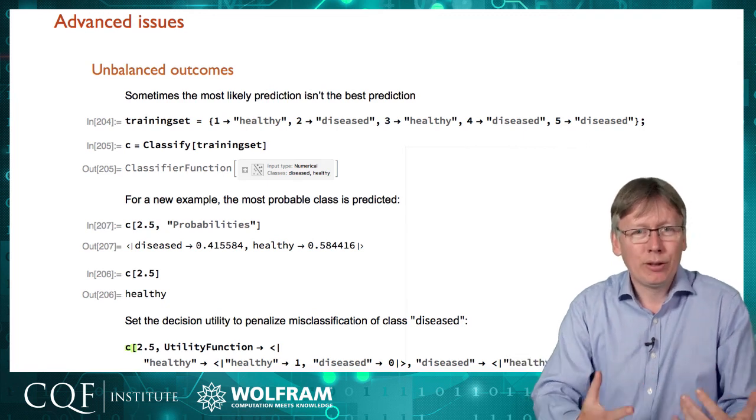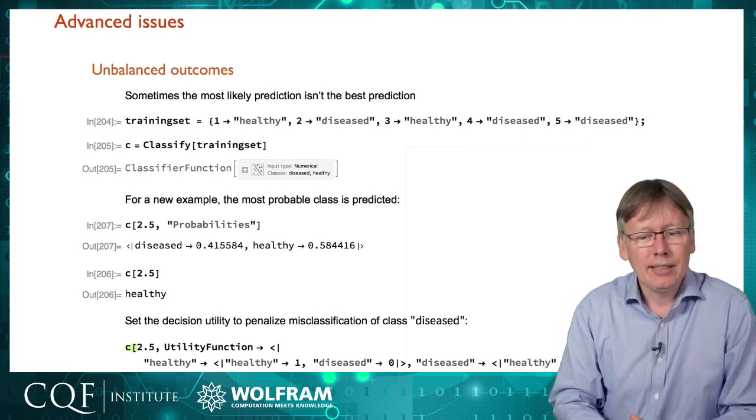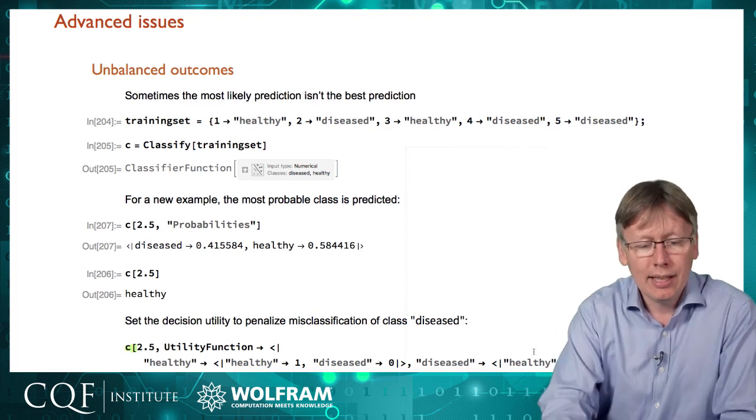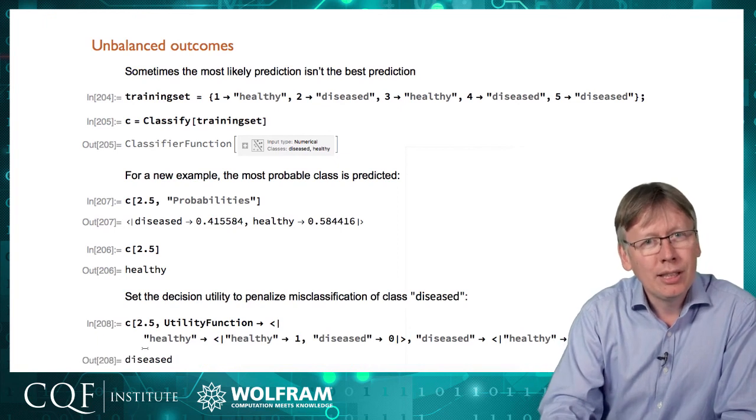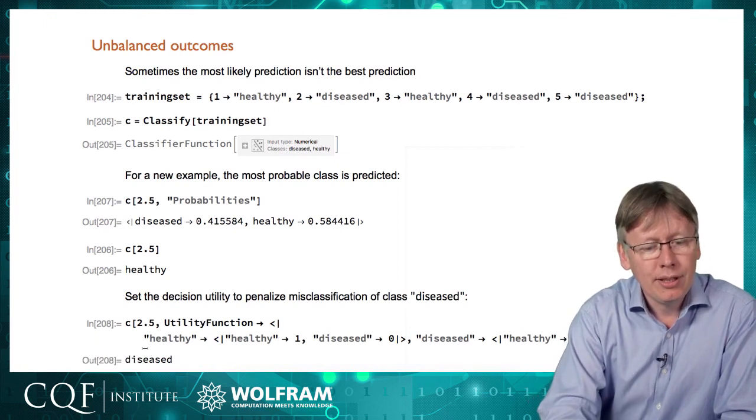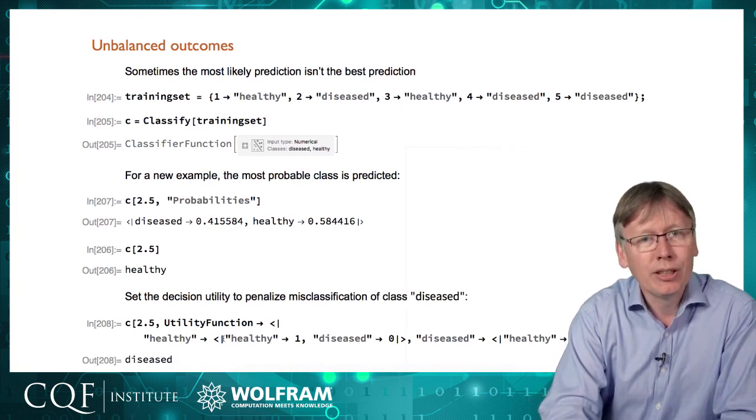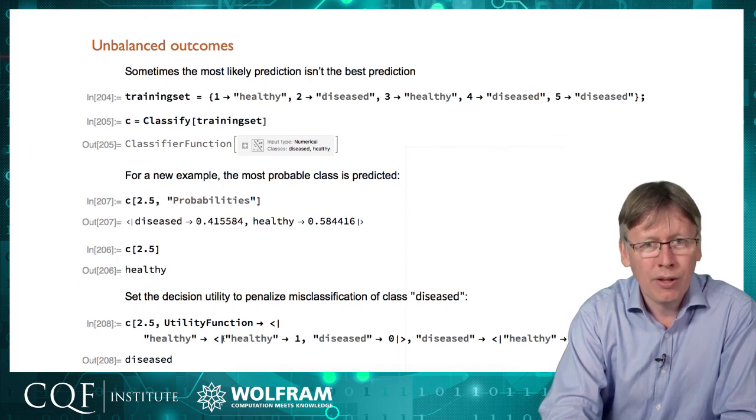So now if it's trying to score the most points it needs to err on the side of saying diseased and now if we rerun that on the two and a half the probabilities haven't changed but the class decision has because of this cost function associated with punishing it or rewarding it for getting the right or wrong answers.